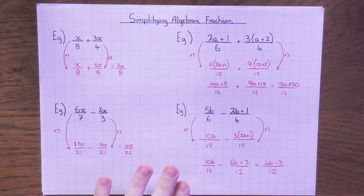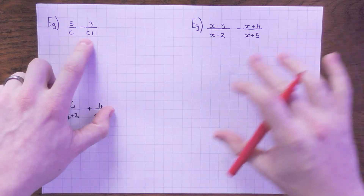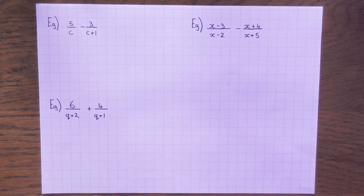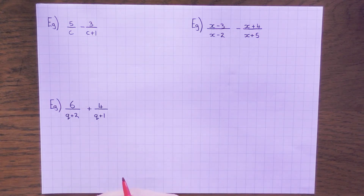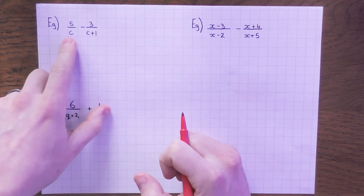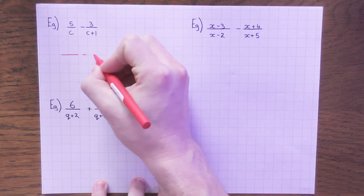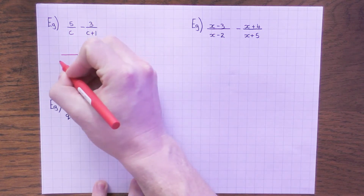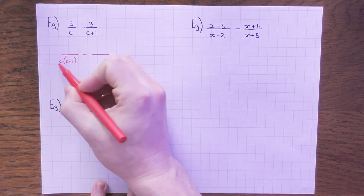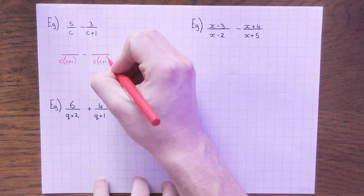Let's carry on and see what happens when we make it a little bit trickier. What if in our algebraic fraction we actually have variables on the bottom as well? The same rules apply — we still need to make the denominators the same. If you remember our 7 and 3 example, I times them together to get 21 as a common multiple. I'm going to use the same logic here and times both denominators together. So c times (c + 1) gives me c(c + 1) as the common denominator.